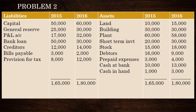Cash Flow from Operating Activities. Current liability — credit trade, bills payable, provision for tax — these are current liabilities. Using the indirect method, increasing or decreasing. Land — land assets. Building assets. Plant assets, short-term investments, stock, prepaid expenses.